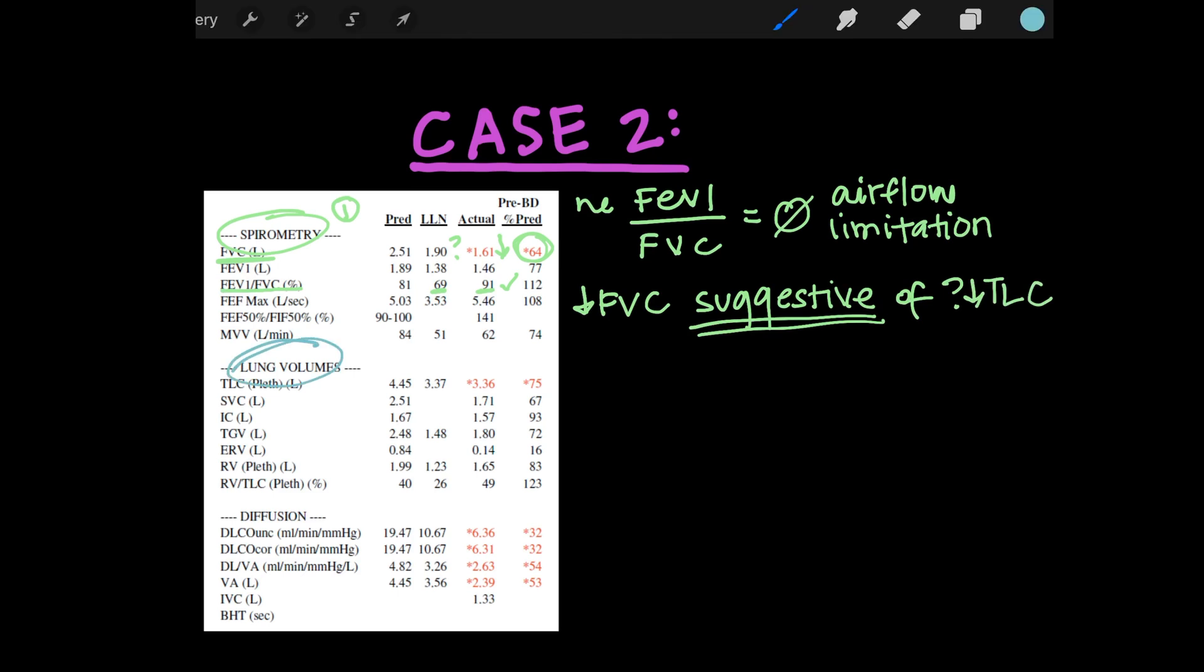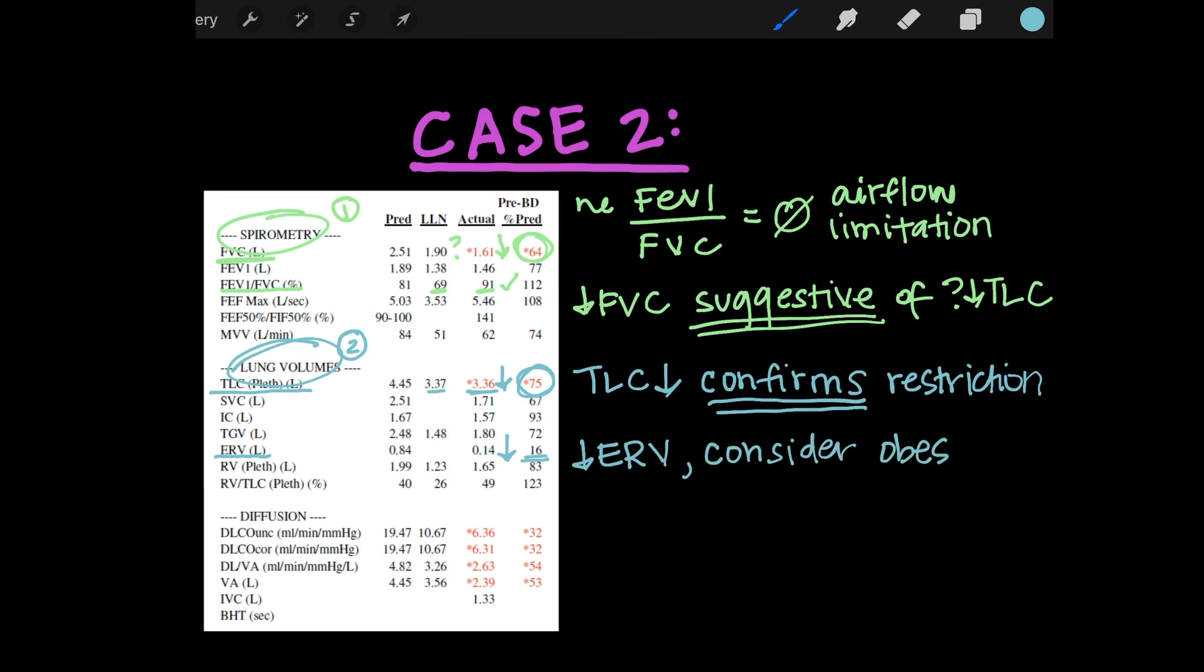So lung volumes, number two step after spirometry. What do we look at? The TLC. And in this patient, it actually is slightly lower than the lower limit of normal. So we can say that this TLC is low, and this essentially confirms what we are suspicious of, which is a restrictive disease process that is going on. I also just want to point out this patient's lower ERV, which could be suggestive of obesity, but could also just go along with their restrictive disease process.